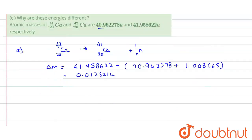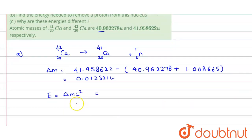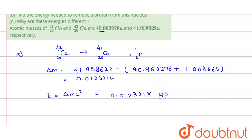The energy needed is E = Δmc². We calculate the energy in MeV by multiplying delta m by 931.49. Putting in the value 0.012321 and multiplying by 931.49, our final answer for part A is E = 11.5 MeV.